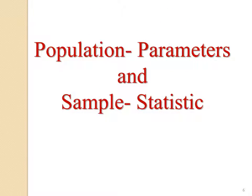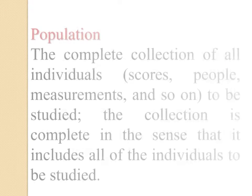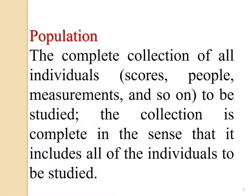Next, the definitions of population, sample, parameters, and statistics — these are very important. Population is the complete collection of all individuals to be studied; the collection is complete in the sense that it includes all individuals to be studied. For example, if you consider the average height of U.S. people, that is the population. Usually this population is too large.